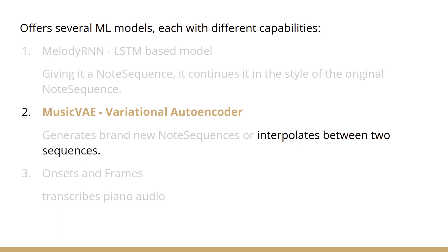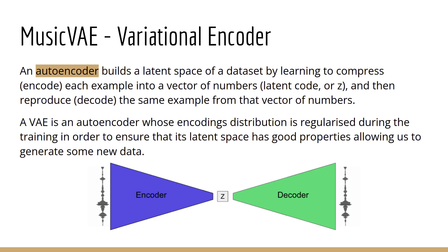In my project I have used Music VAE, performing interpolation between two note sequences — that is, combining two music pieces and producing one fresh piece of music. Music VAE is an autoencoder which builds a latent space of a dataset. It is primarily based on the encoder-decoder architecture of RNN, which takes a specific input to encode it into a vector of latent codes, then gives this vector as input to the decoder to generate new sequences. The encoder can be understood as a many-to-one RNN and the decoder as a one-to-many RNN.